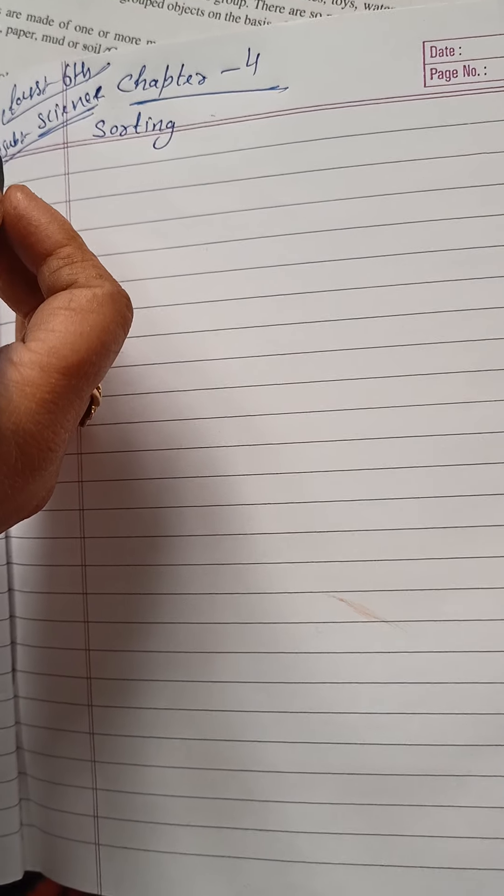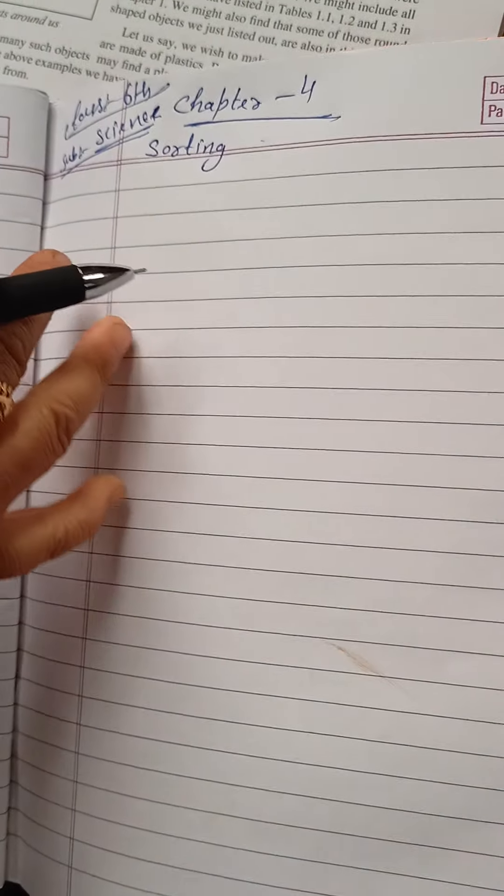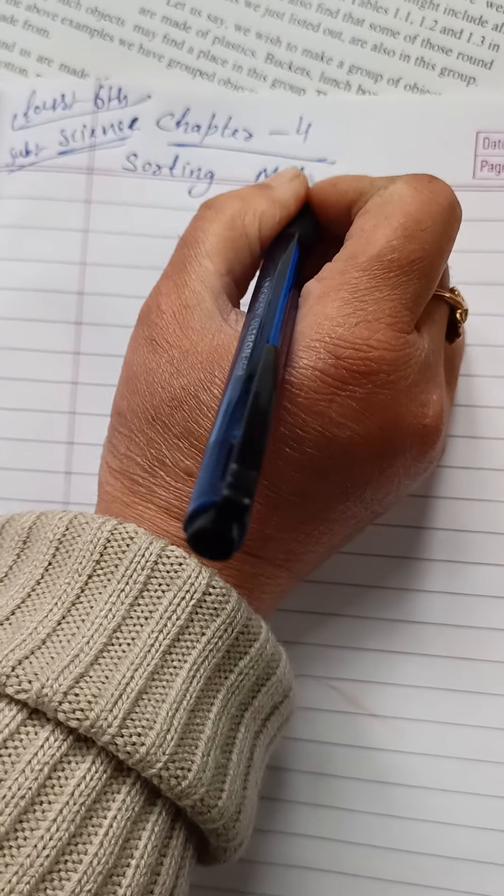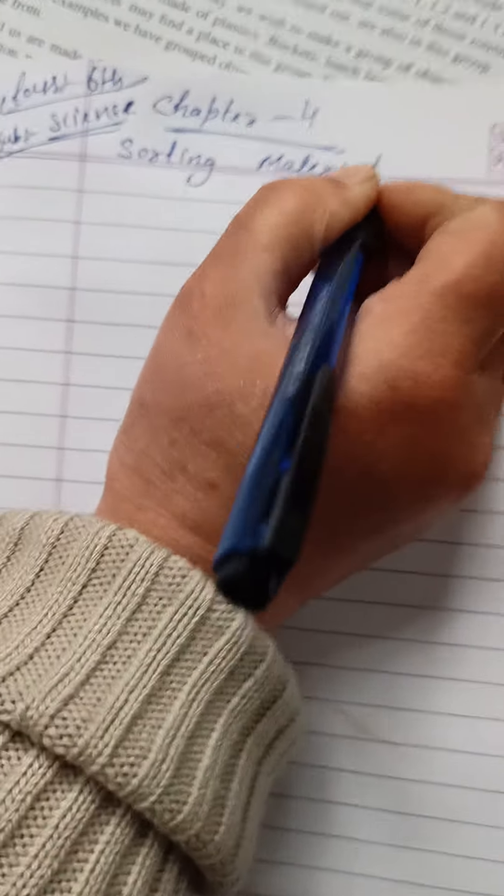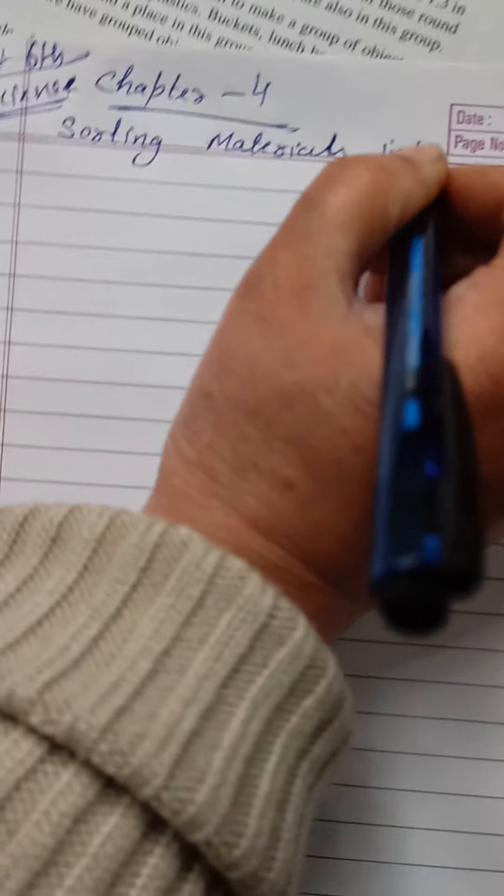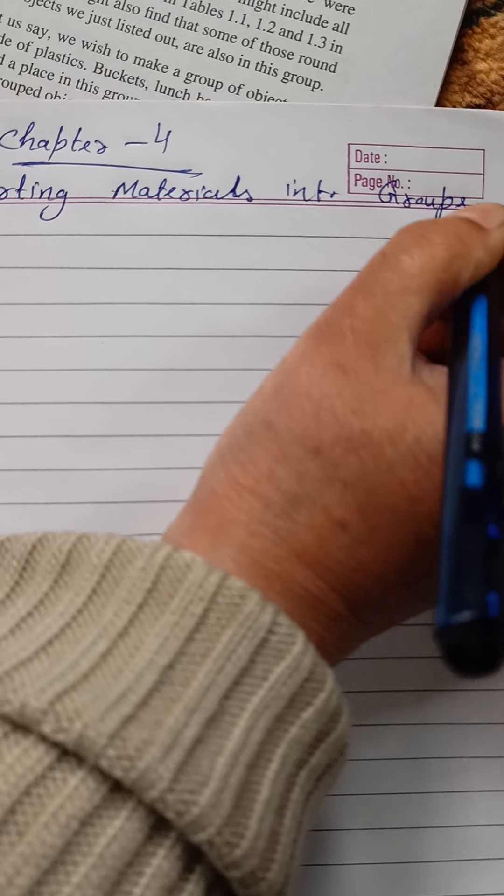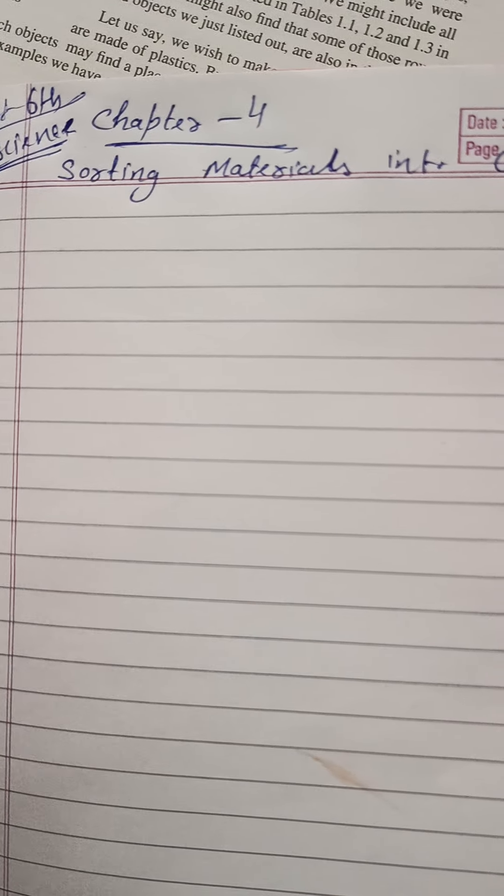Assalamualaikum. Go to page number 27, Chapter 4, on sorting materials into groups. You can skip the introduction. The chapter is about sorting materials into groups, which means grouping materials together.